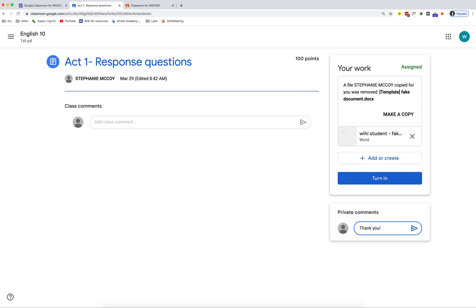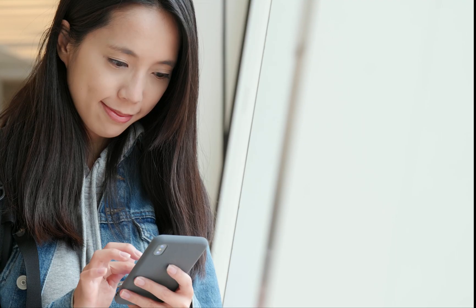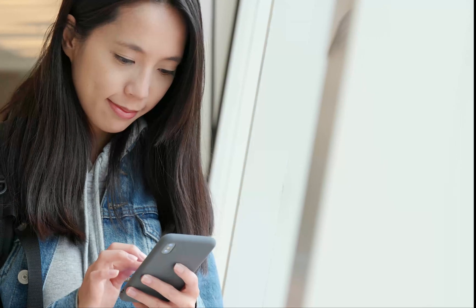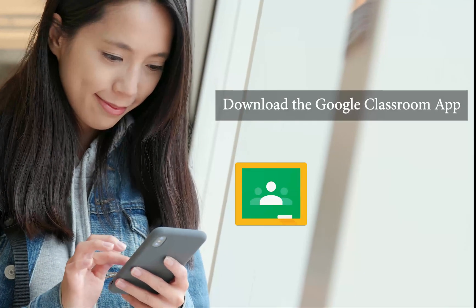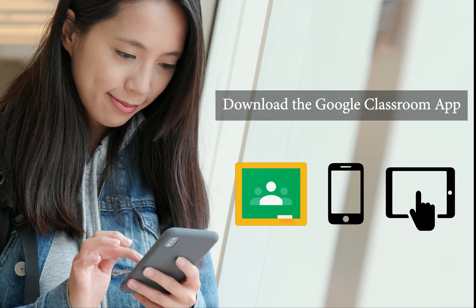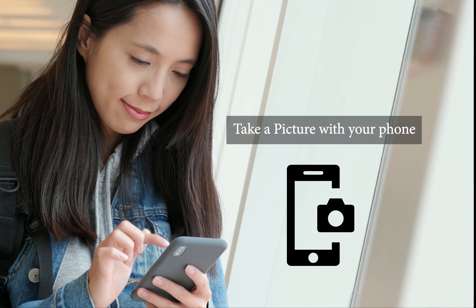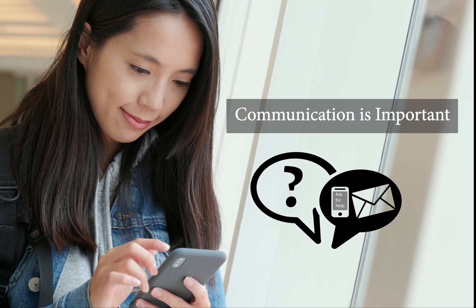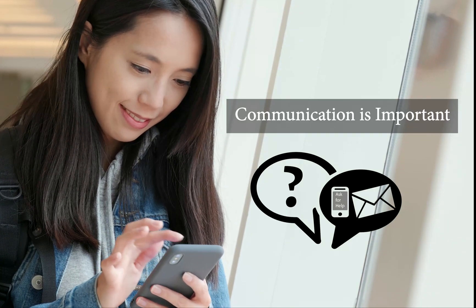If I'm drawing or handwriting an assignment, can I turn it into Google Classroom? Yes, you can turn in anything through Google Classroom by attaching a photograph. The easiest way to do that is to download the Google Classroom app on your phone or tablet. Simply take a picture of your work with your phone and upload it through the app. As we transition to digital learning, remember it's important to communicate with your teachers. If you have a question, please ask.